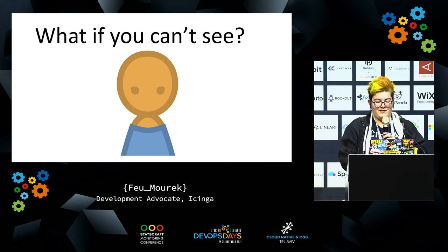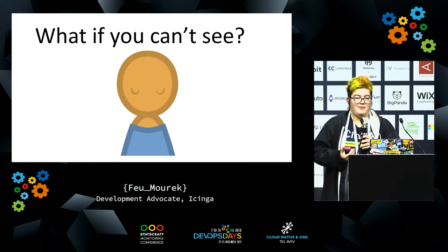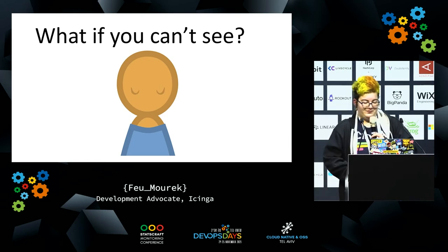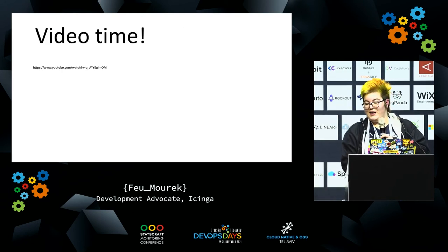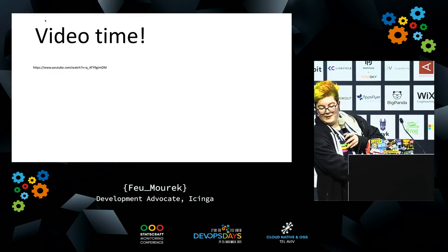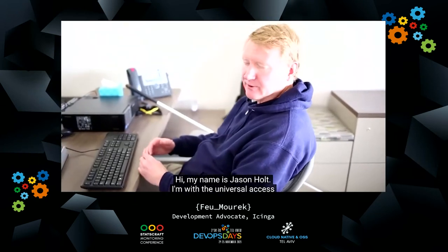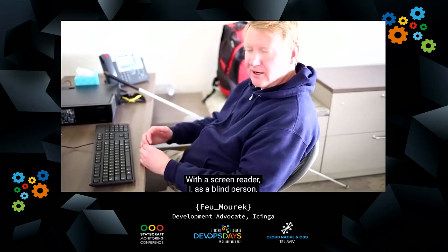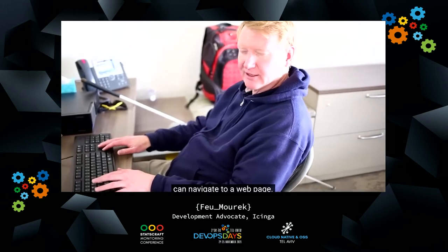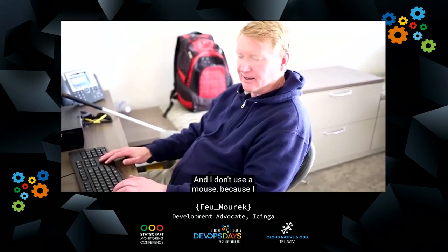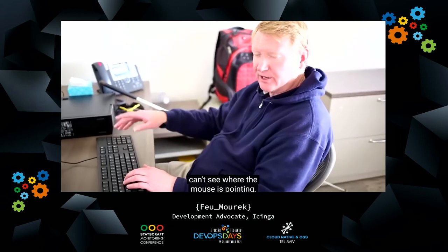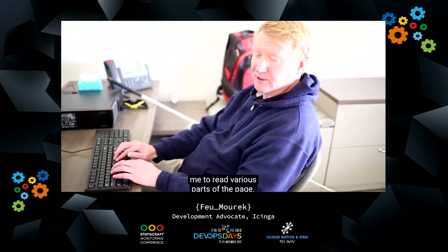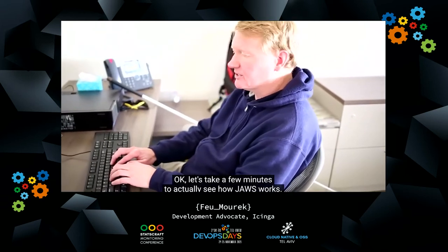But what if someone can't see at all? How do blind people navigate that? Because all of the fun we can have with colors won't affect people who cannot see. For this I have prepared a video. Hi, my name is Jason Holt, I'm with the Universal Access Department. Today we will be demonstrating a screen reader. With a screen reader, I, as a blind person, can navigate to a web page. I don't use a mouse because I can't see where the mouse is pointing, but I can use a keyboard, and JAWS, the screen reader, will tell me where I am on the page and allow me to read various parts of the page. Let's take a few minutes to actually see how JAWS works.